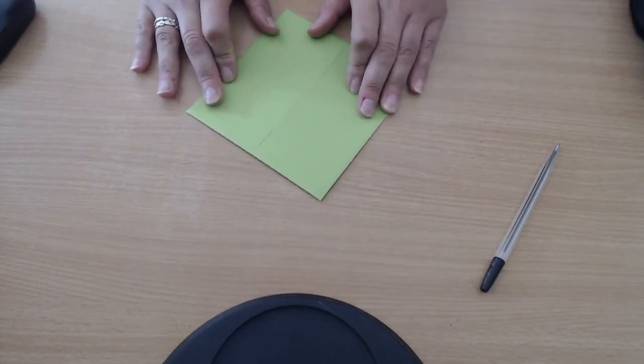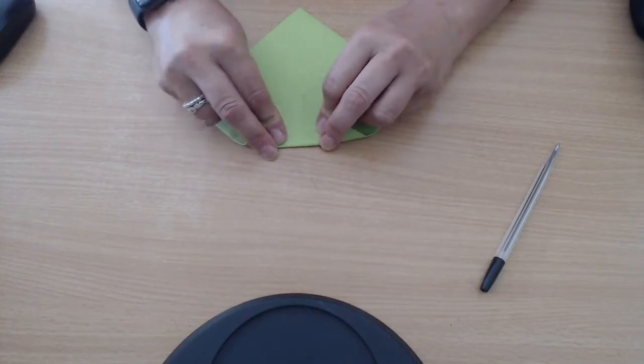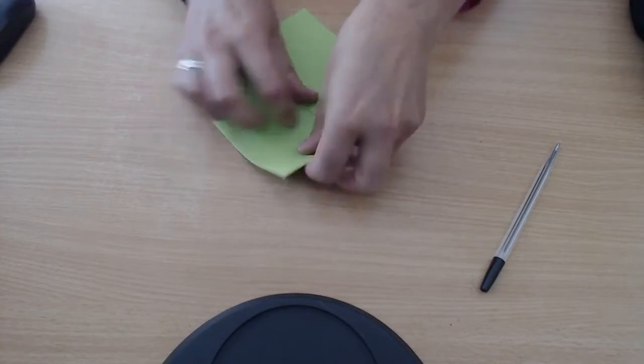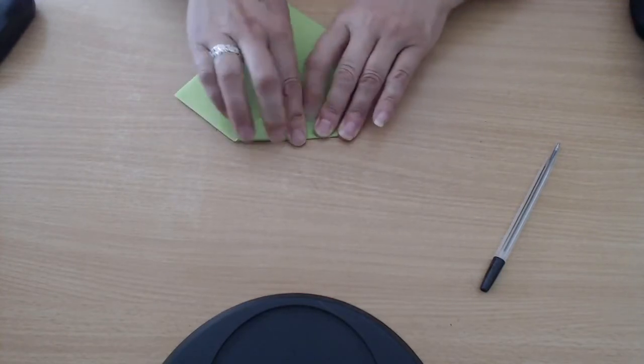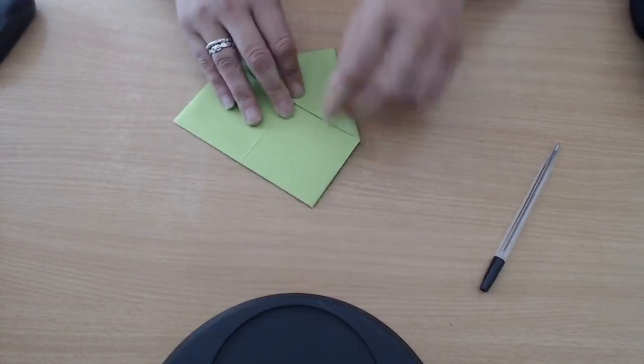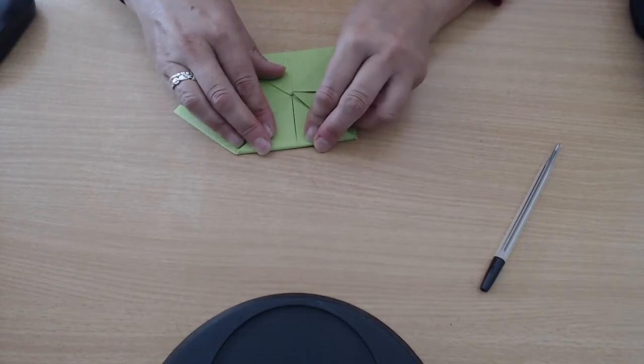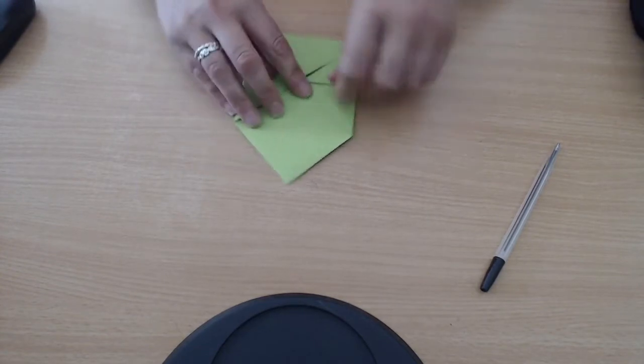So I'm going to turn it over. Now can you see what I've done? I've got four flaps there. I'm going to turn it over and I'm going to do exactly the same again. I'm going to fold my corners in so I make a smaller square.